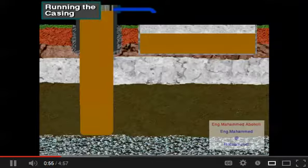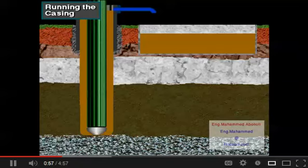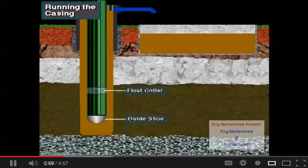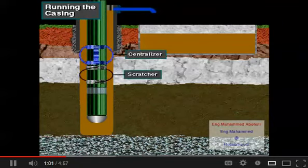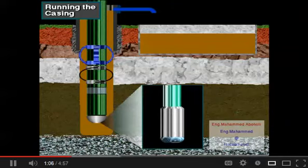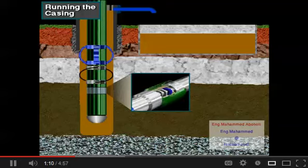Notice at the bottom of the casing the guide shoe and float collar, also notice the centralizers and scratchers. The guide shoe guides the first joint of casing into the wellbore. A valve in the float collar lets the crew float the casing into the well to lessen the load on the rig's hoisting system.